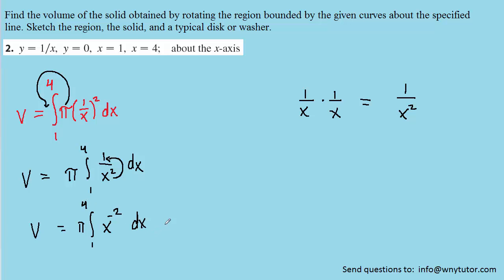And so this expression becomes x raised to the negative 2 dx. And then of course we can now integrate. So when we integrate, we're going to add 1 to the exponent. That's going to give us x to the negative 1. And then we divide by that new exponent, which is negative 1. And then we're evaluating this from 1 to 4.